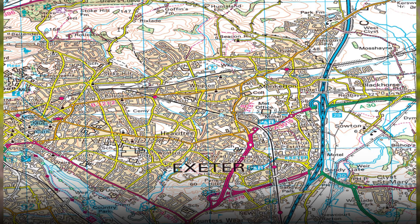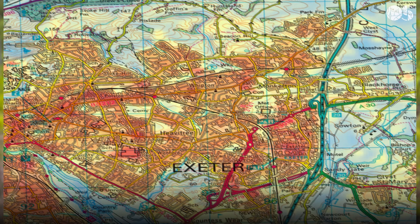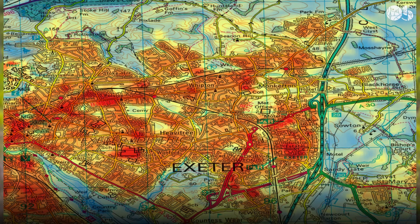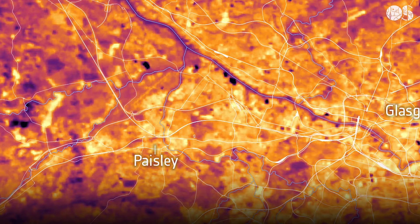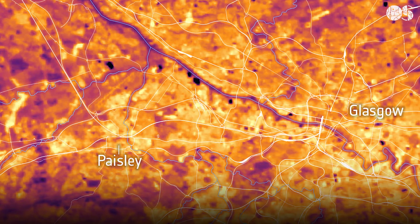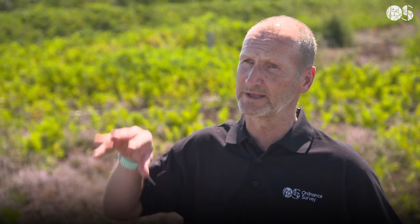But if you combine it with Ordnance Survey mapping, which means you can identify what the different heat sources are — particularly in an urban environment — it can actually help with urban planning, understanding different roof types, roof materials and what impact that has on heating. How hot it's going to be today actually varies across the town in which you live. You can only get that context when you combine it with geospatial data.